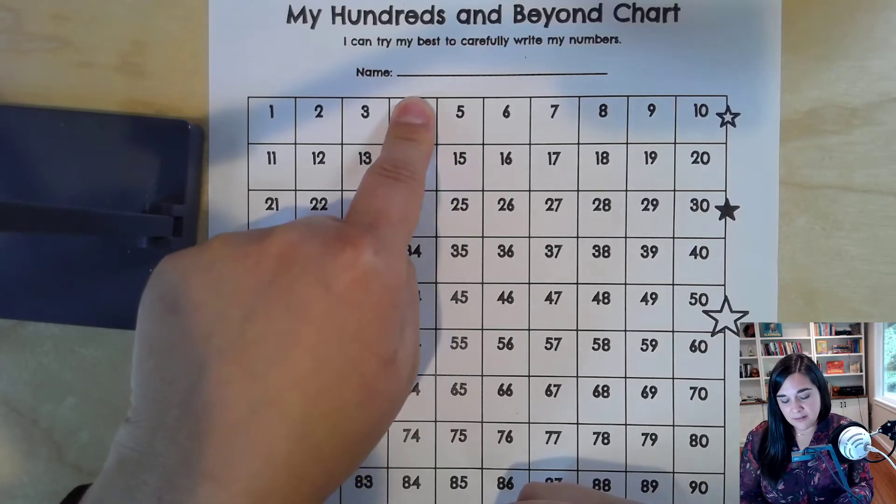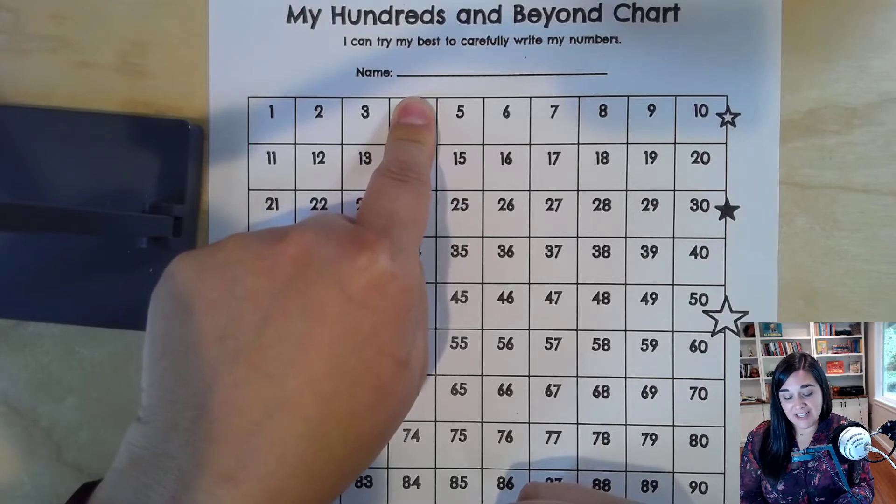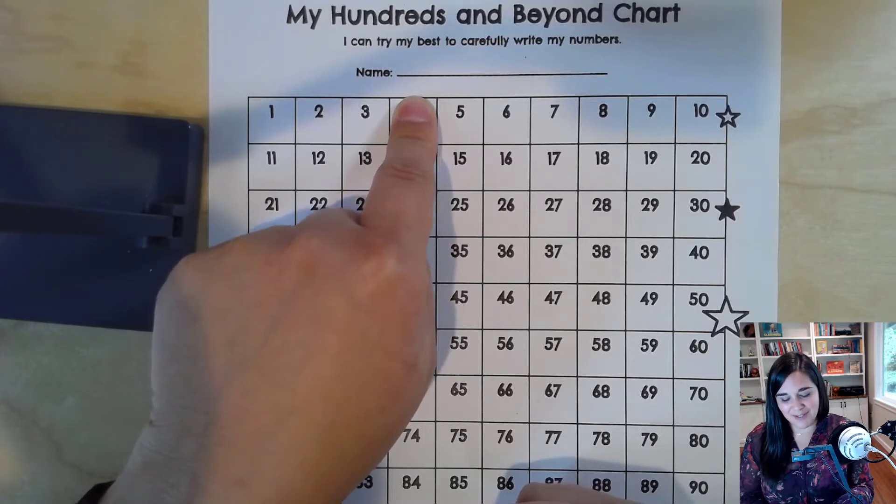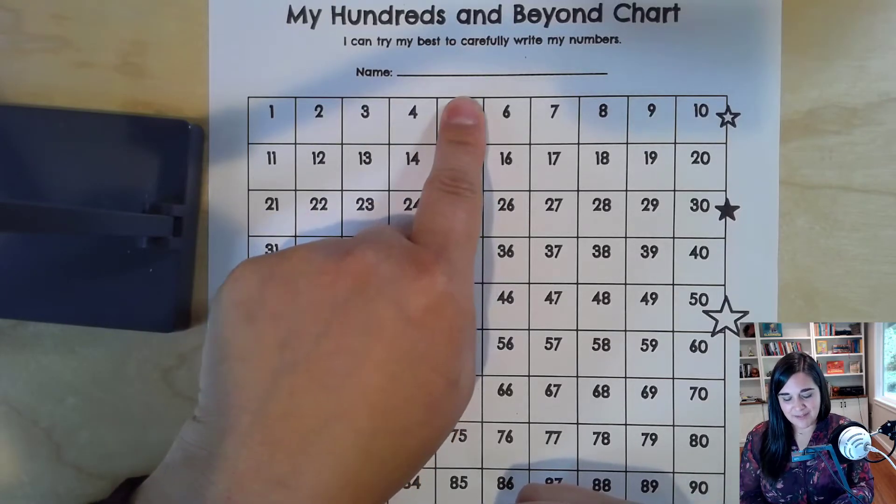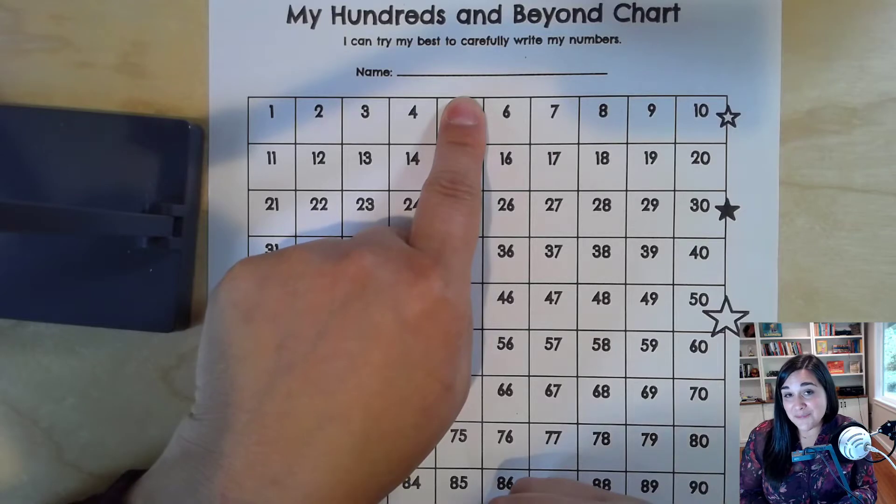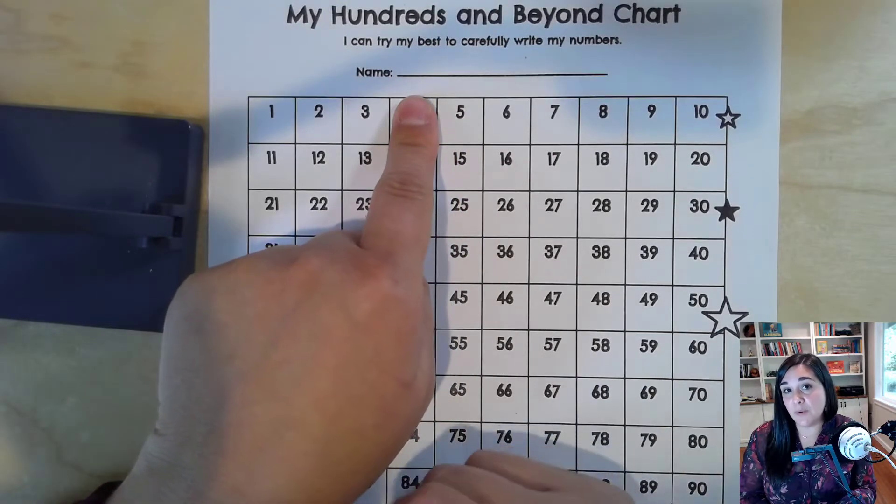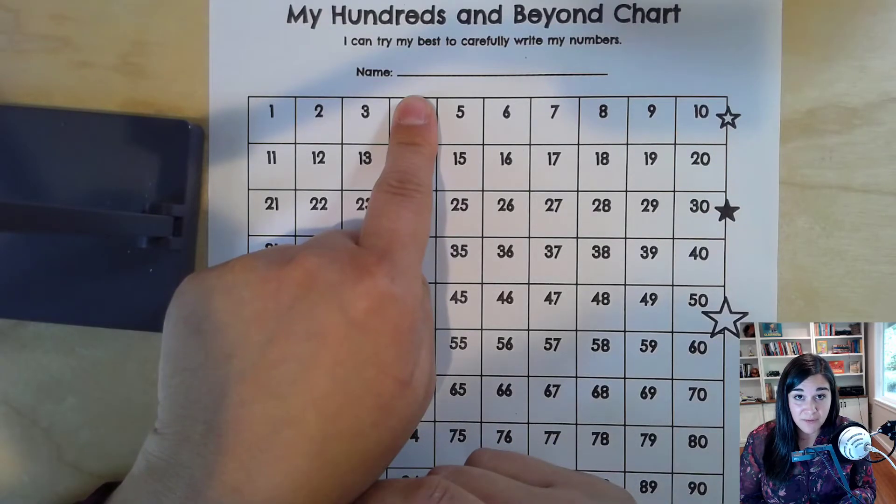Without moving your finger, 1, 2, 3, 4. Can you tell me what is the next number after 4? 1 more? It's 5. You're right. Without moving your finger, let's put our finger back on the number 4. Can you tell me what is 2 more than 4?